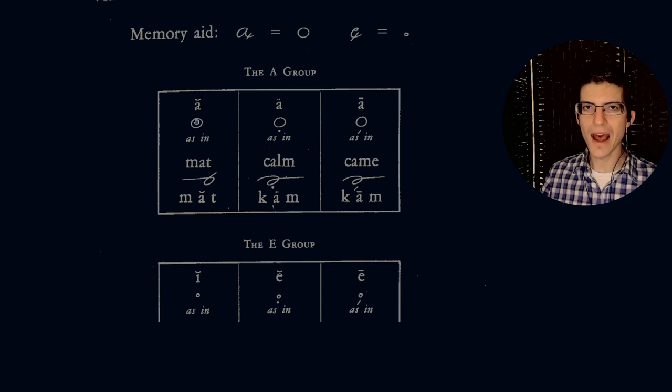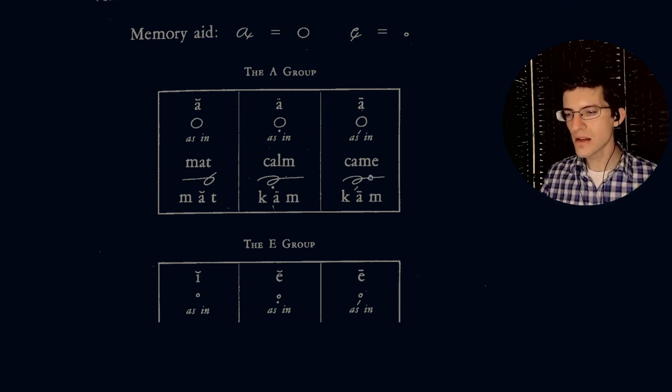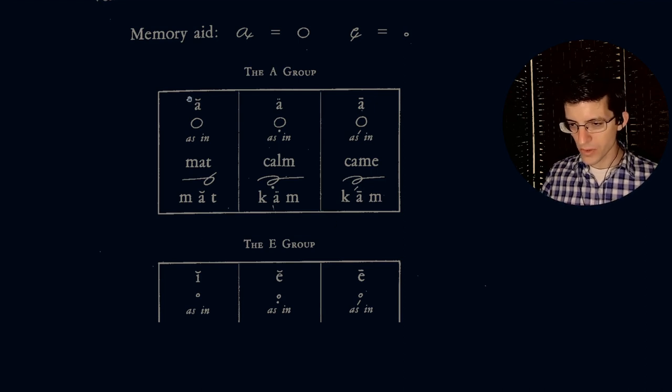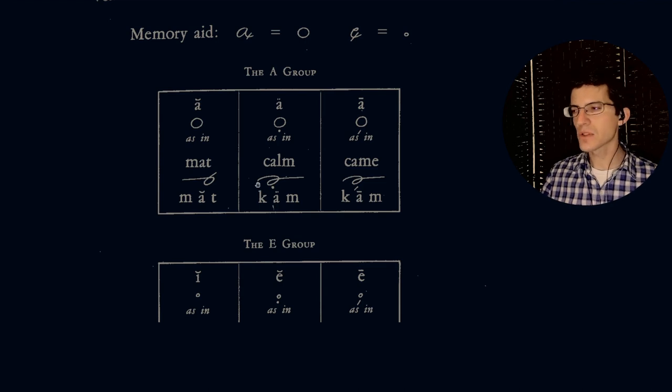And then how you differentiate this from being cam or calm, then you have to put a dot underneath. So notice there's a dot underneath the circle, and that's how you indicate the ah sound. So we have the ah sound, ah sound, and then we have the a sound. The long sound is indicated by the stroke underneath the vowel. So this would be the word came, K, A, M.